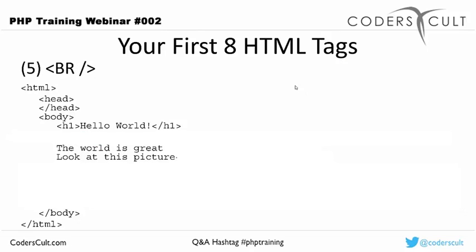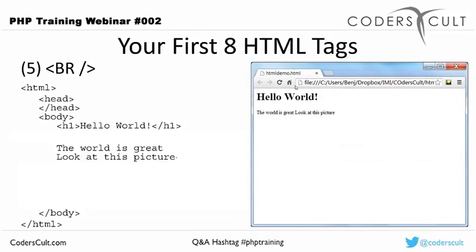Here's the next tag: the text 'The world is great' and 'Look at this picture' are written on separate lines in the code, but displayed on one line in the browser — because multiple spaces and multiple lines are disregarded in HTML. So I added the br tag — the break tag — which adds a hard line break. Now with the br tag added, there are two separate lines displayed. Note that h1 tags normally have a break included, which is why the text after the h1 doesn't start at the end of the heading.